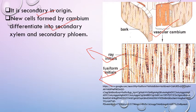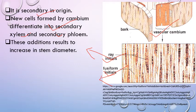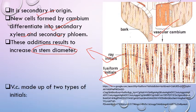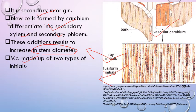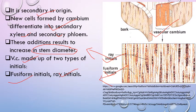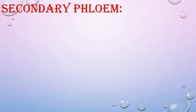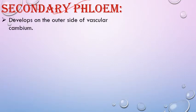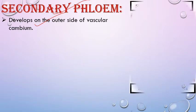New cells formed by cambium are differentiated into secondary xylem and secondary phloem. As these cells are formed, they help in increasing the diameter of the stem. Secondary phloem is formed on the outer side of vascular cambium — cells cut towards the outer side differentiate into secondary phloem.